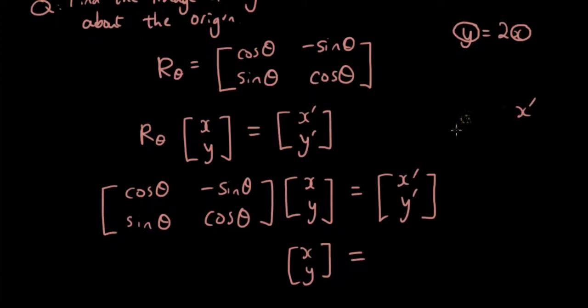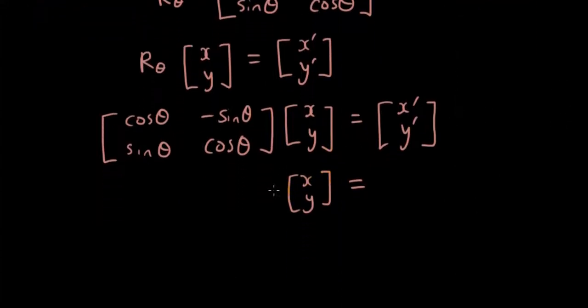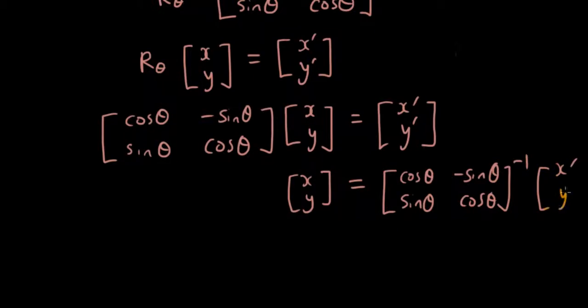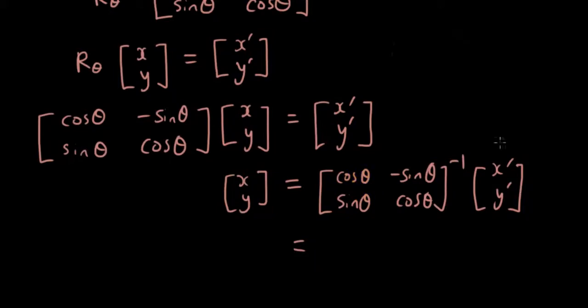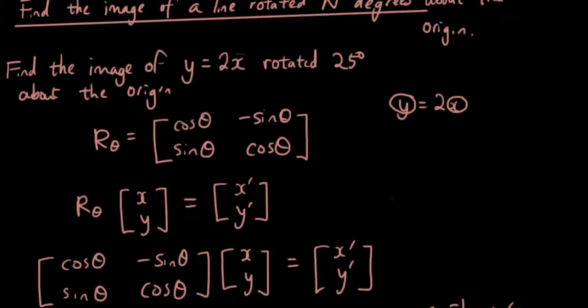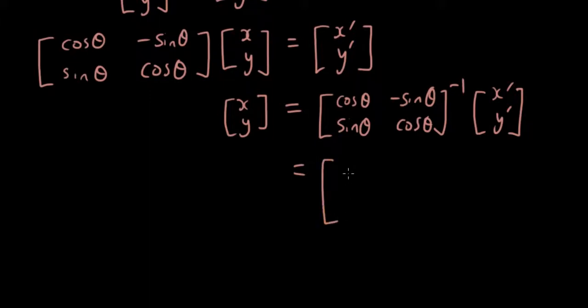So what we're going to do is multiply by the inverse of the rotational matrix on both sides. So if we do that, then we get the inverse of the rotational matrix on the right-hand side, multiplied by x' and y'. Okay, now what is theta? Well, the question says theta is 25 degrees. So let's substitute that into our equation.